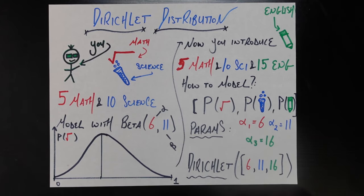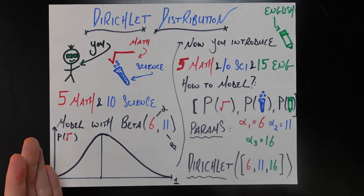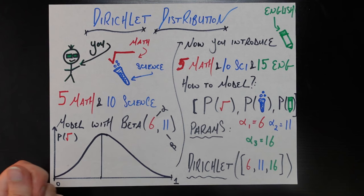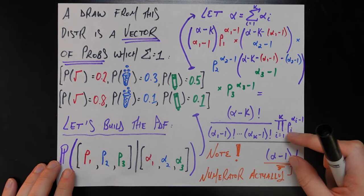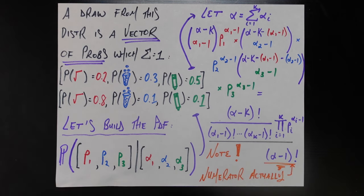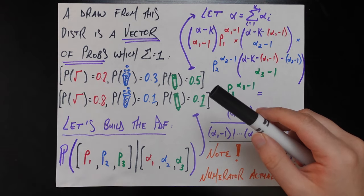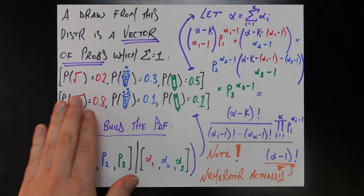One important point to note as we talk about the beta or Dirichlet distributions: I think a confusing point with either of them is that they are probability density functions of probabilities themselves. Just like in the beta distribution where our range on the x-axis was a probability, a draw from the Dirichlet distribution is going to be a vector of k probabilities which need to add up to one, because they model the probability of being in class A, class B, or class C — in this case, math, science, or English, or however many majors we introduce.